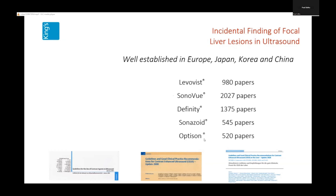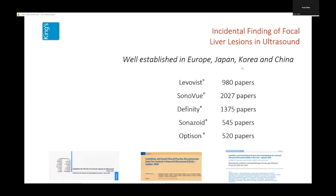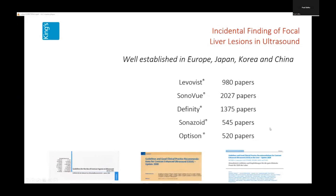Sonosoid is an agent used in the Far East — Japan, China, and Korea — and has quite a robust shell. It is well established in Europe, Japan, Korea, and China, but not so well established in the United States. There are a lot of publications out there — well over 5,000 papers on the subject since contrast agents were first introduced into clinical practice.